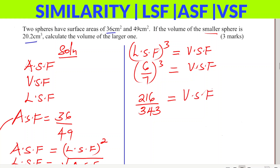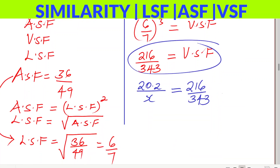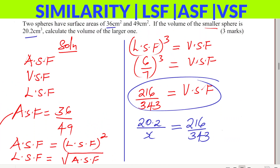Now, looking at this volume scale factor, the smaller volume is in the numerator and the larger one is in the denominator. So we set up: the volume of the smaller sphere, 20.2, divided by the volume of the larger sphere x, equals 216/343, where x is the volume of the larger sphere that we're looking for.